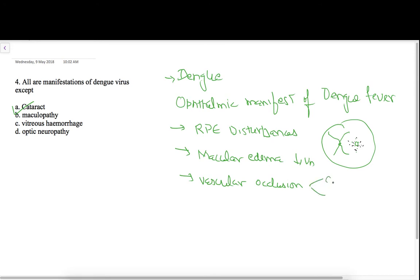Then vascular occlusion. Now what are vascular occlusions? Like CRVO, CRAO. So sometimes you can land up in CRVO and CRAO type picture also with dengue virus.